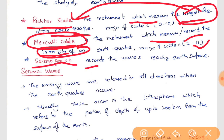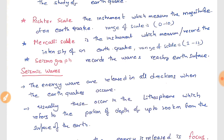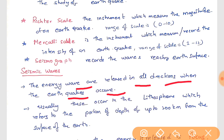Seismograph is the instrument which records the waves reaching the earth's surface. There are some waves related to seismic activity. The discontinuities between the layers — between the mantle and crust, between the outer core and inner core, between the outer core and inner mantle — are all known with the help of these earthquake waves, called seismic waves. The energy waves released in all directions when earthquakes occur are called seismic waves.